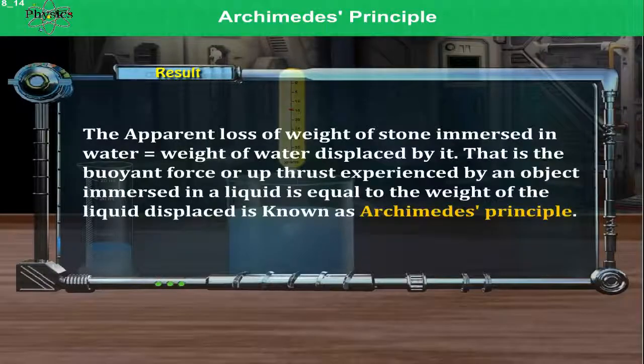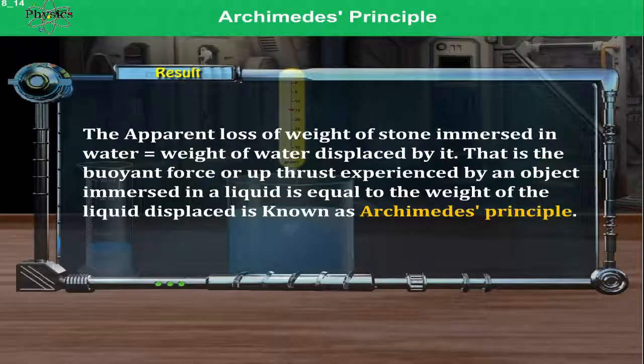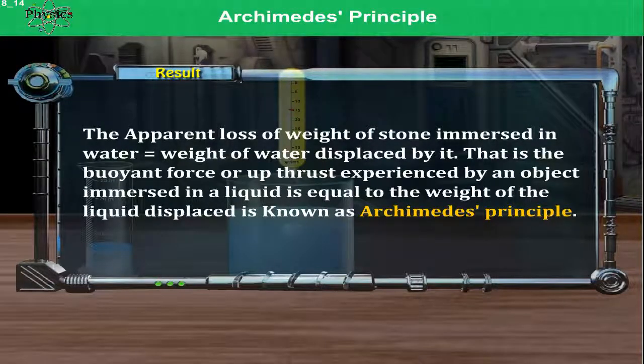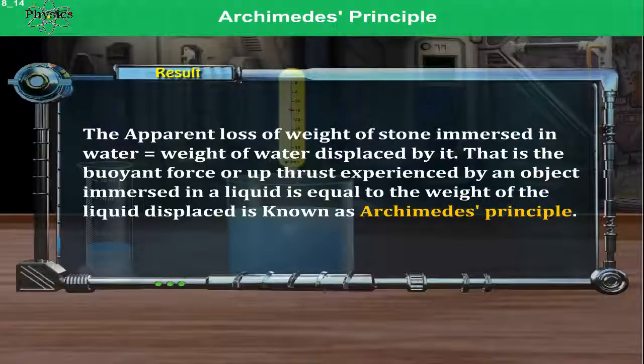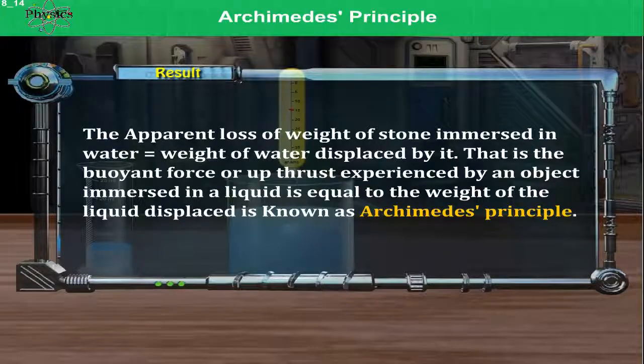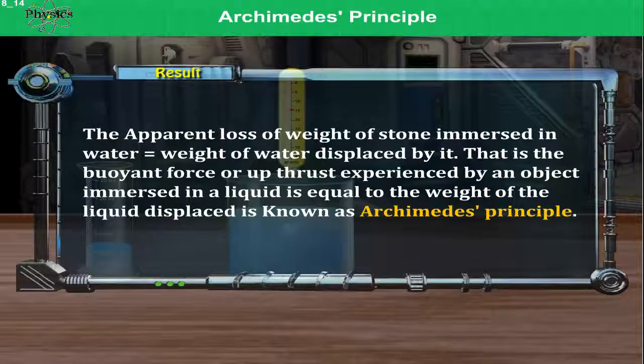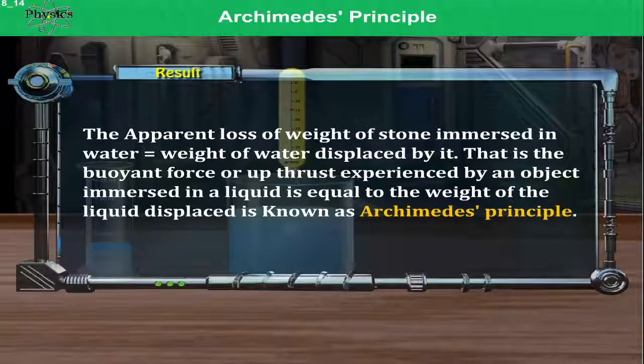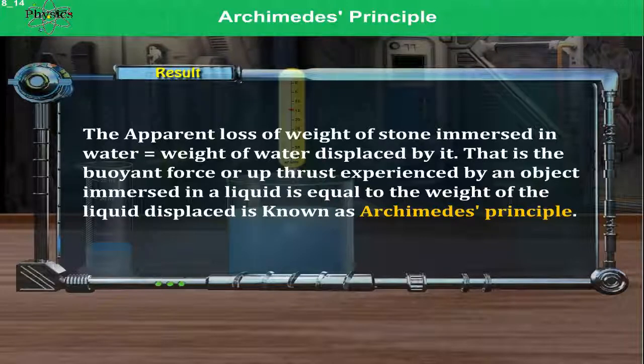Result: The apparent loss of weight of stone immersed in water is equal to the weight of water displaced by it. That is, the buoyant force or upthrust experienced by an object immersed in a liquid is equal to the weight of the liquid displaced. This is known as Archimedes Principle.